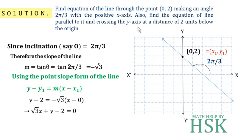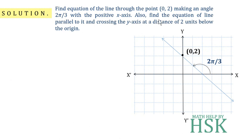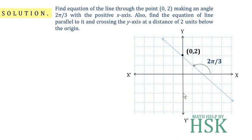For the second part, we have to find the equation of a line parallel to this line that crosses the y-axis at a distance of 2 units below the origin. The line cuts the y-axis 2 units below the origin, which means it passes through the point (0, −2).